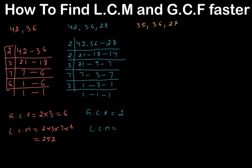The least common multiple is the product of all the divisors: 2 times 2 times 3 times 7 times 3, which equals 252.